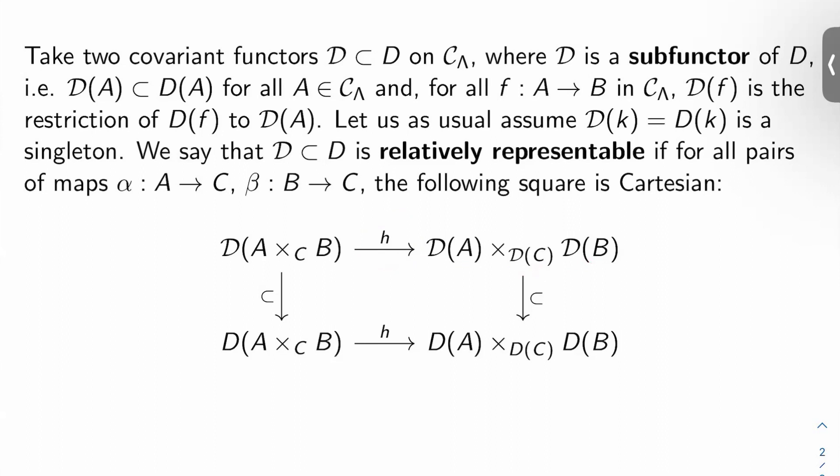And then we have a containment of script D of A cross B over C in D of A cross B over C, and another containment on the right here of script D of A cross script D of B in D of A cross D of B. And then we have another map H here from D of A cross B to D of A cross D of B. So if this commutes, then we're going to say that script D inside D is a relatively representable sub-functor.